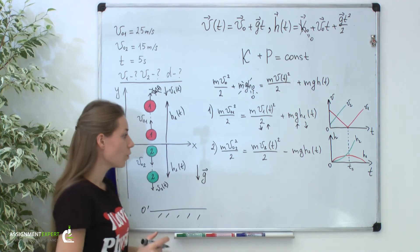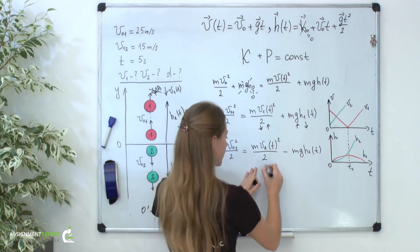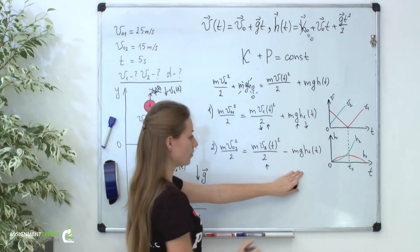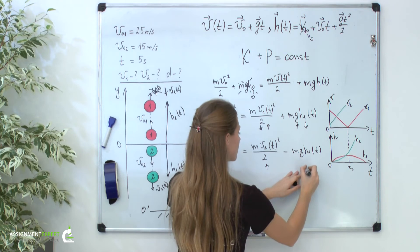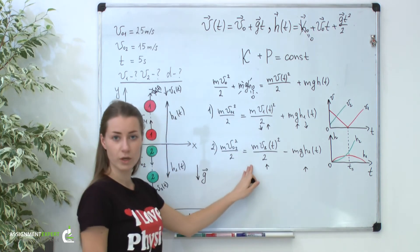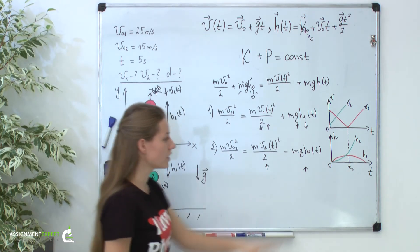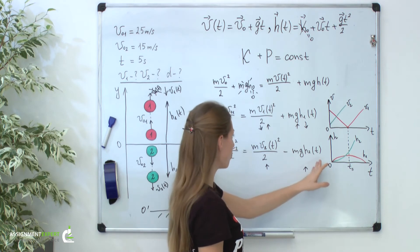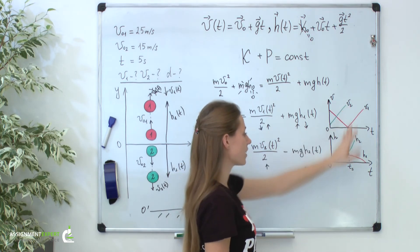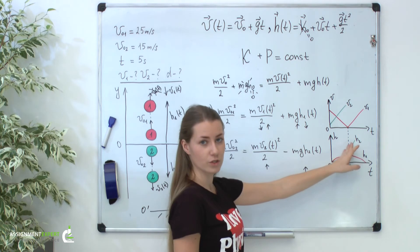All in all, we can see that with increasing the kinetic energy here, our potential energy should also increase, because this sum should be constant. Indeed, we can see it on our pictures. With increasing kinetic energy, our potential energy also increases.